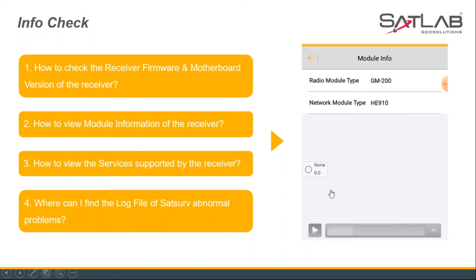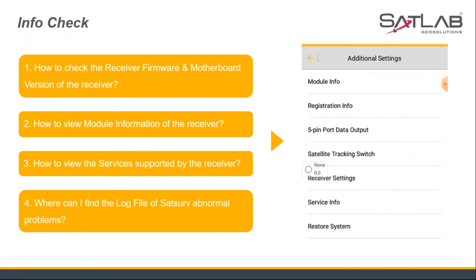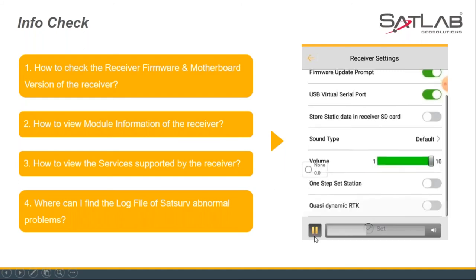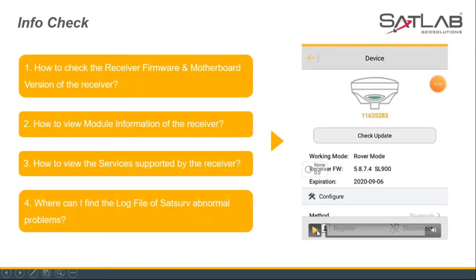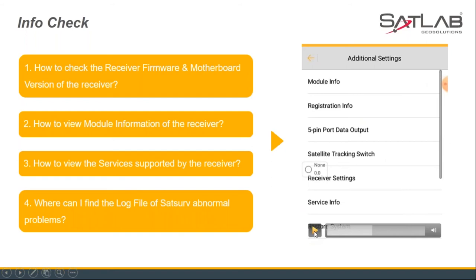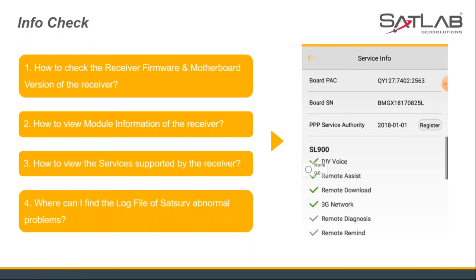Second, in the additional settings, the model information can be checked. You can see the radio and network model type here. In the receiver settings, you can also do some basic settings including the receiver voice volume. Satellite tracking configuration can also be switched. In the service information page, you can check if your receiver functions are opened, like NFC and tilt.